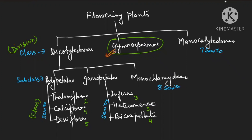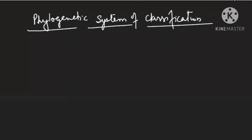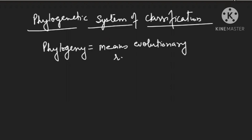Therefore, a third system — the phylogenetic system of classification — was developed, which we now follow for studying plant kingdom. Phylogeny means evolutionary relationship; if you are arranging organisms with respect to evolution, you are following phylogeny. This term was given by Lamarck, and the concept of phylogeny was given by Haeckel.